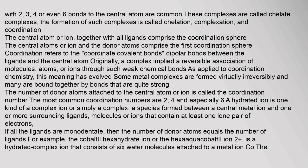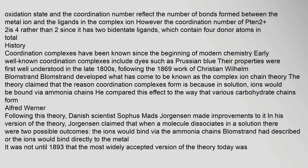Some metal complexes are formed virtually irreversibly and many are bound together by bonds that are quite strong. The number of donor atoms attached to the central atom or ion is called the coordination number. The most common coordination numbers are two, four, and especially six. A hydrated ion is one kind of a complex ion — a species formed between a central metal ion and one or more surrounding ligands, molecules, or ions that contain at least one lone pair of electrons.